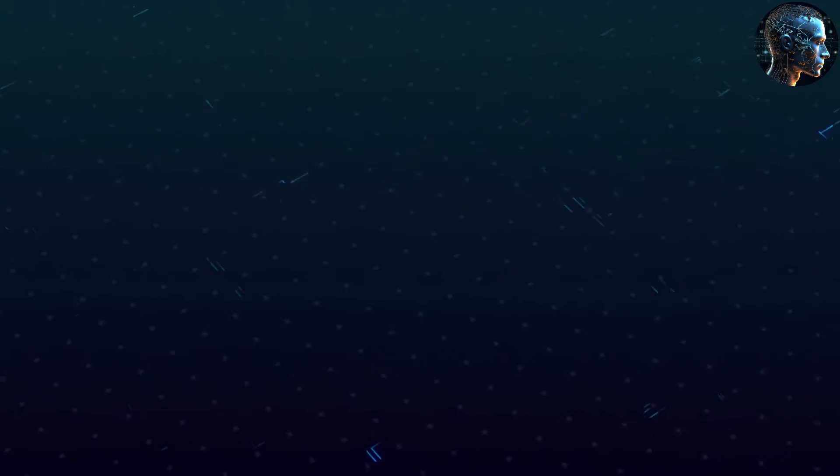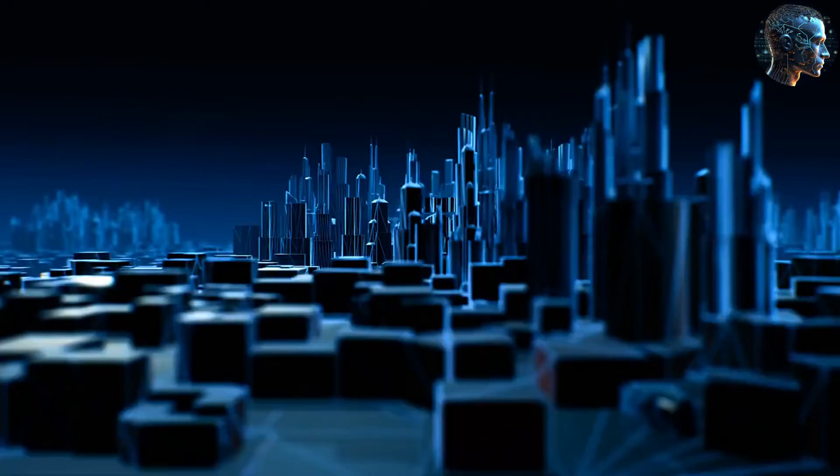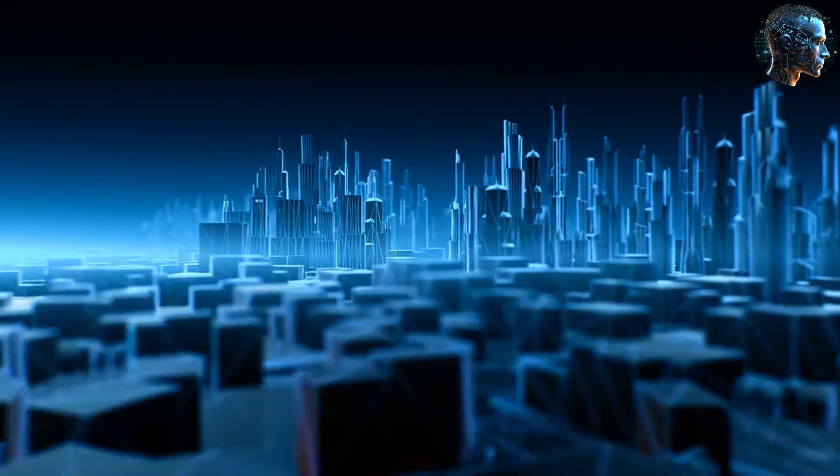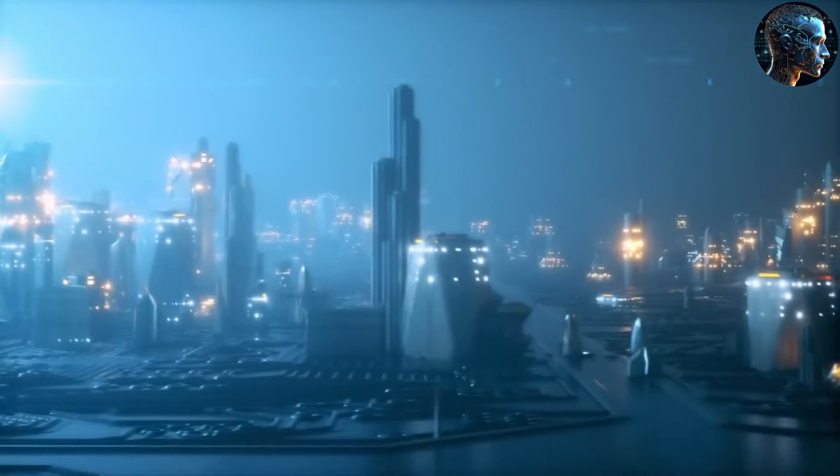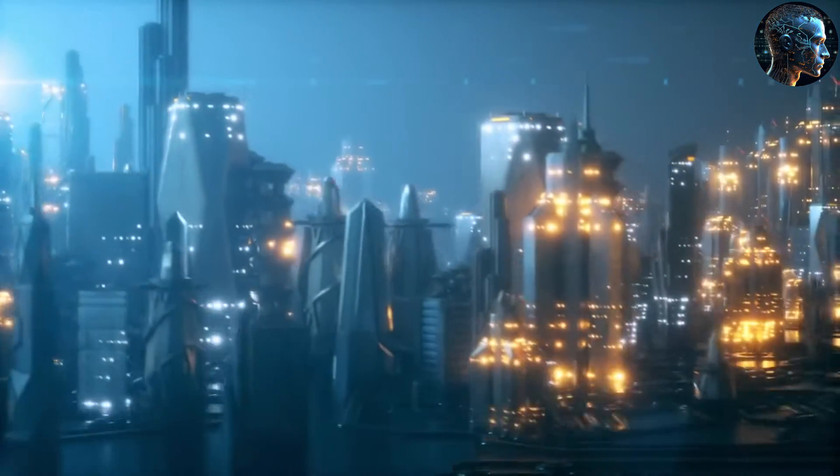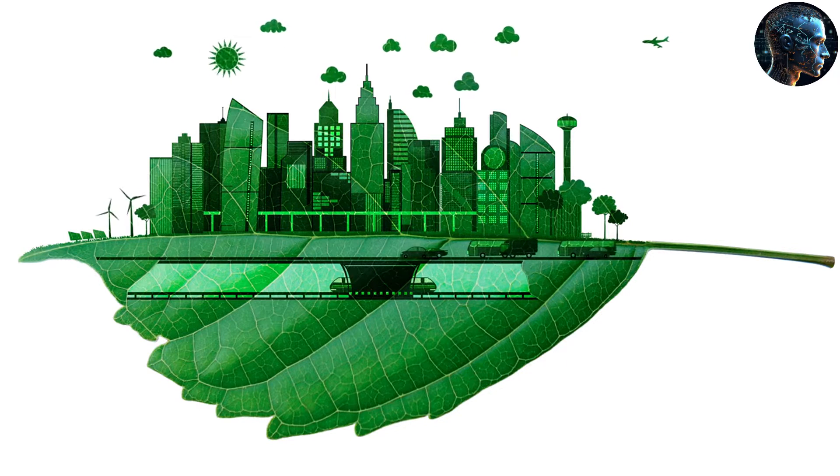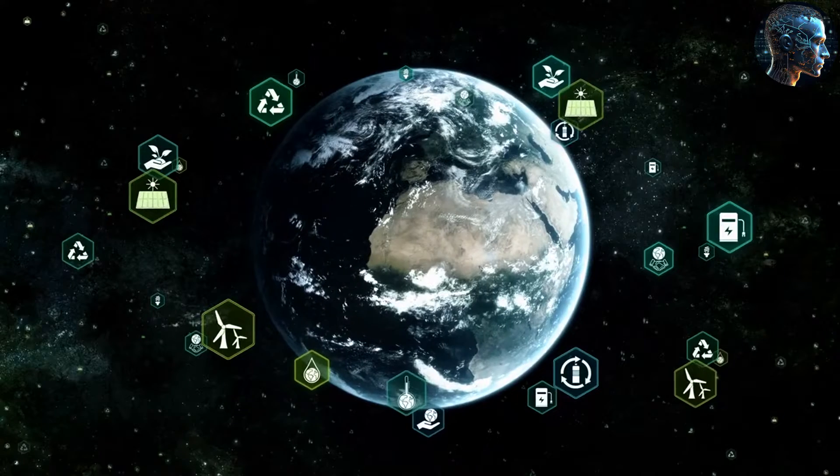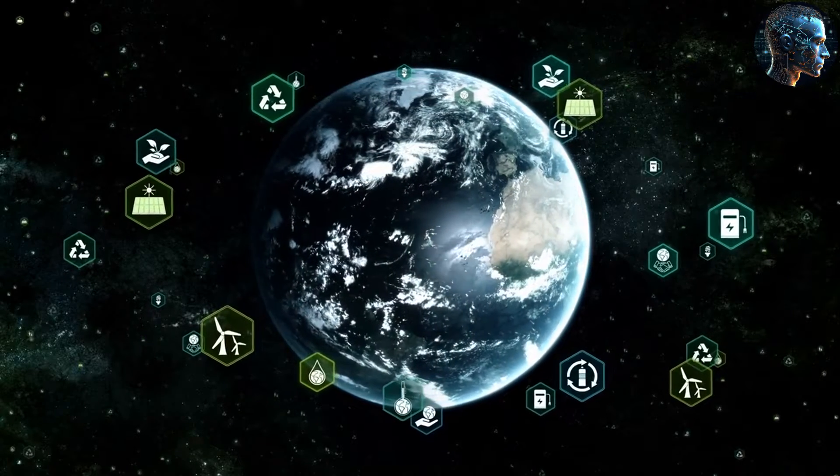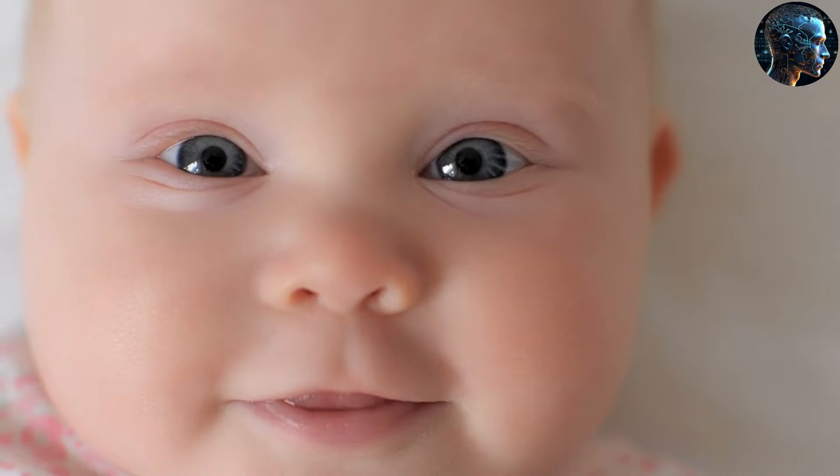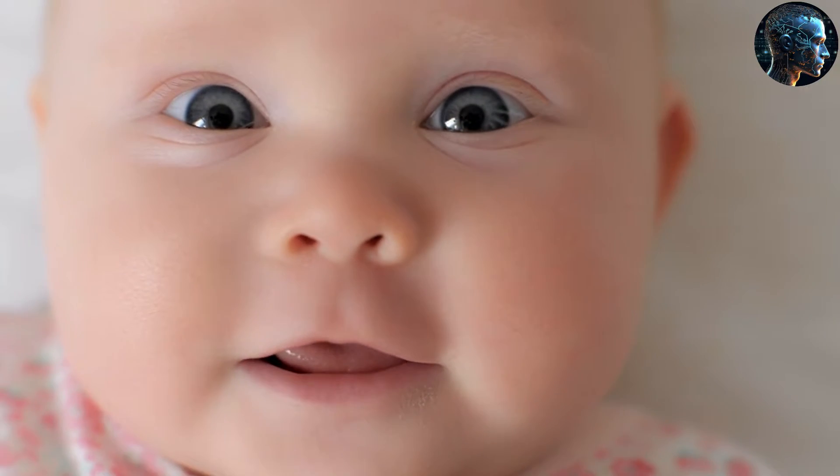These structures can change shape and function in response to environmental conditions or human needs. They're self-repairing, energy efficient, and in harmony with their surroundings. This advancement in building technology reflects a broader shift towards sustainability and adaptability in all aspects of life. Cities are smarter, greener, and more responsive to the needs of their inhabitants. The way we think about space, utility, and design has been transformed, leading to a world that is more resilient and in tune with the natural environment.